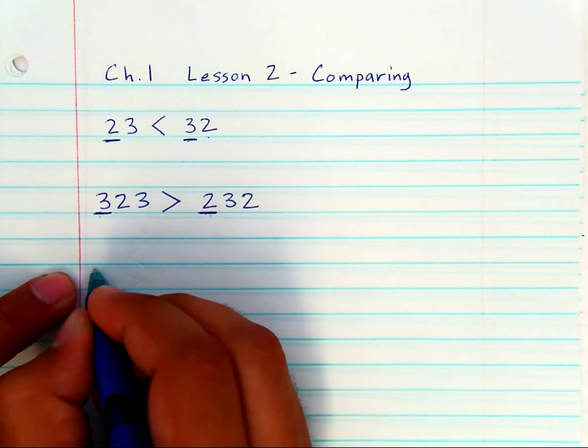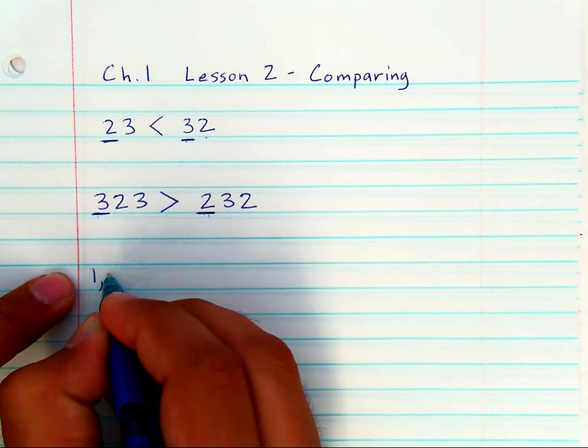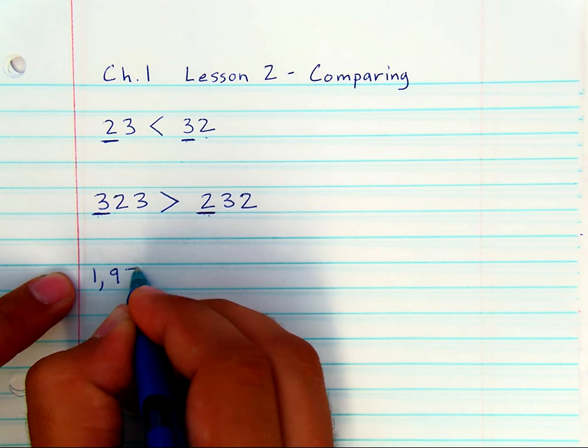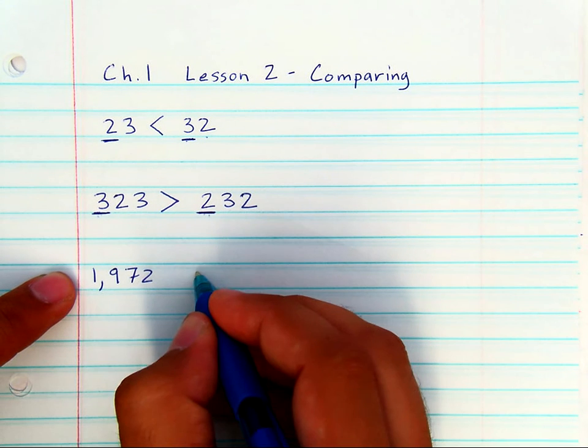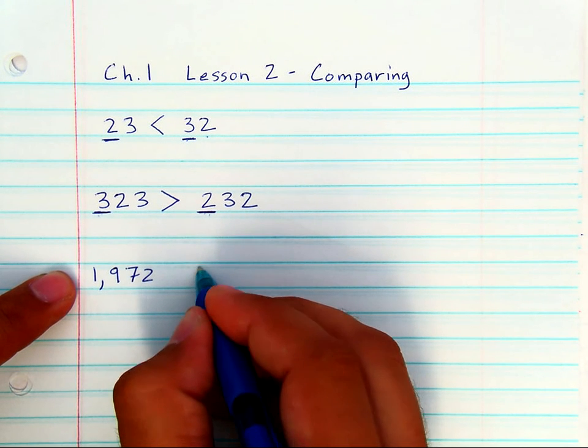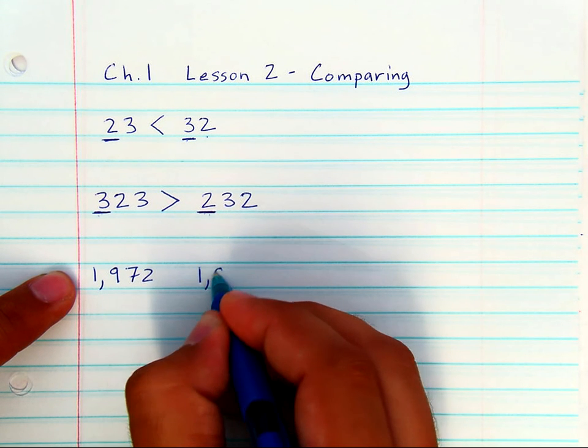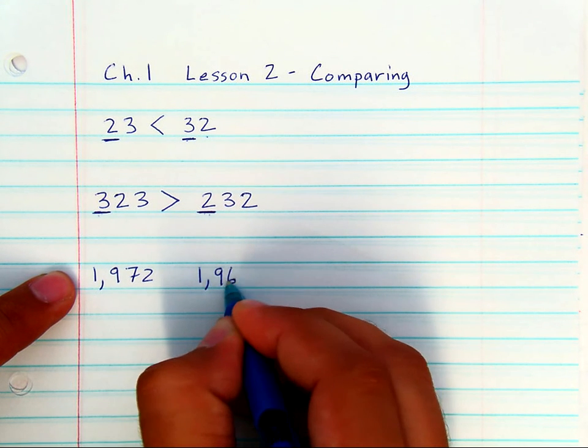But the process is the same. If you have 1,972 and you have 1,968,